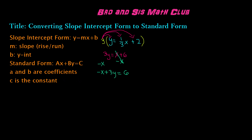Now we have our standard form equation in ax plus by equals c form, which is negative x plus three y equals six. However, always remember that the value of a has to be positive. In order to make a positive, we divide both sides of the equation by negative one. By doing this, we change the signs of all the terms, which makes our negative x into a positive x. Negative x divided by negative one gives us positive x, positive three y divided by negative one gives us negative three y, and six divided by negative one gives us negative six.